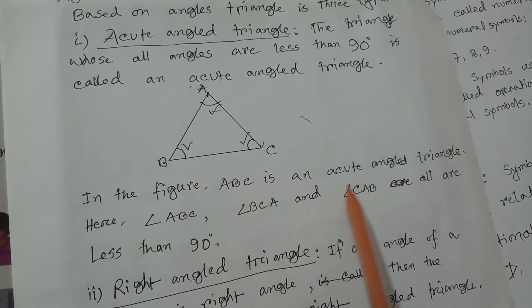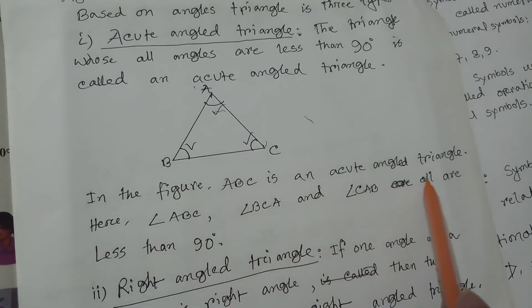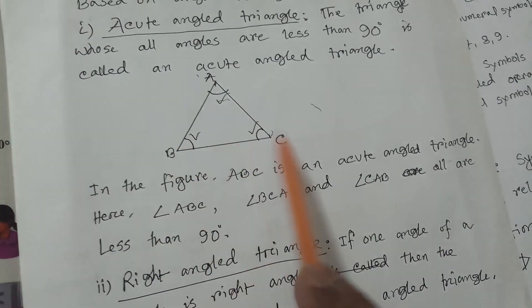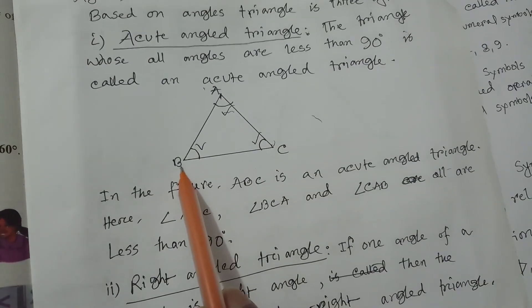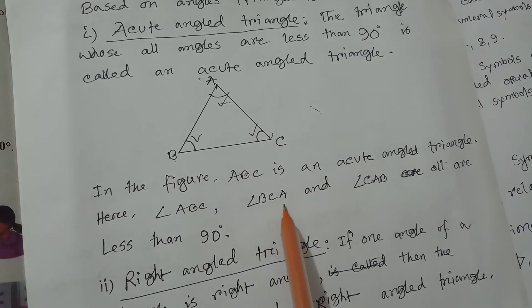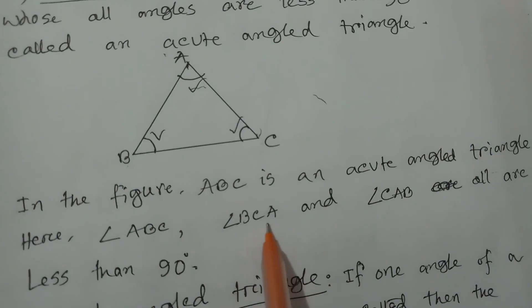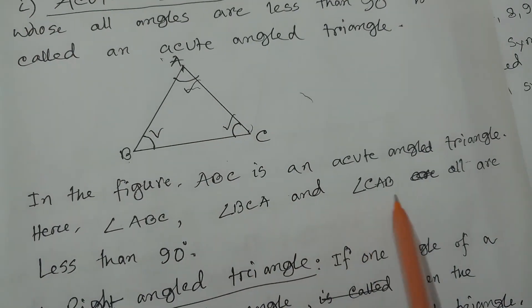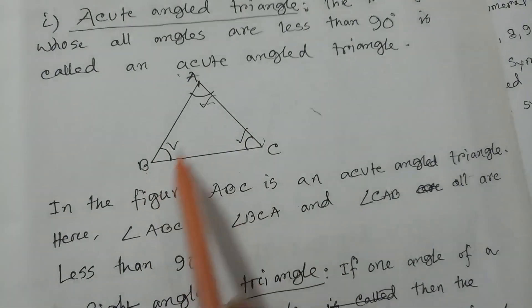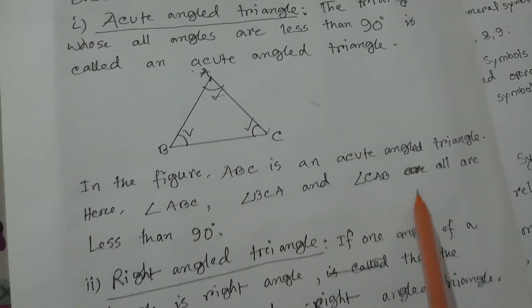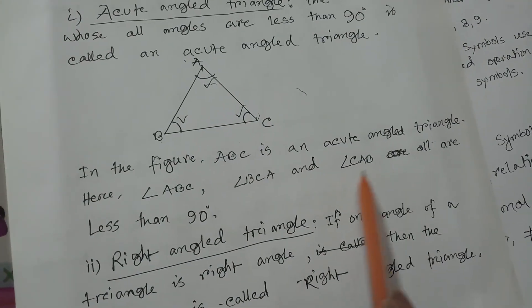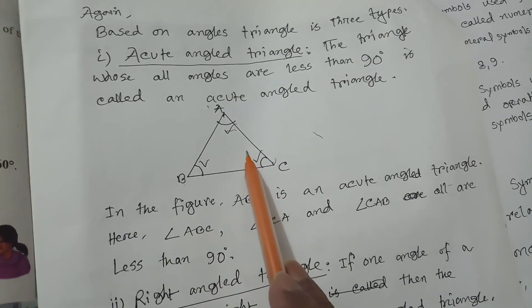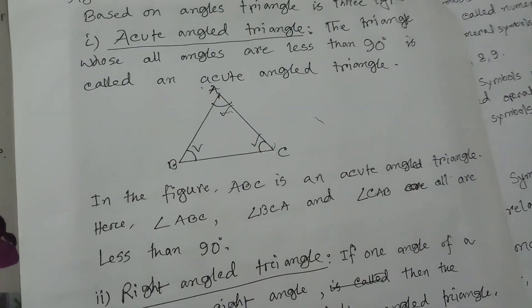In the figure, ABC is an acute angle triangle. Here, angle ABC, angle BCA, and angle CAB — these three angles are separately less than 90 degrees. So, this is an acute angle triangle.